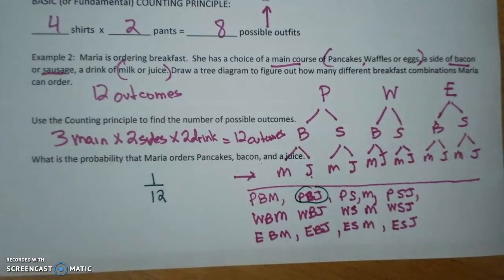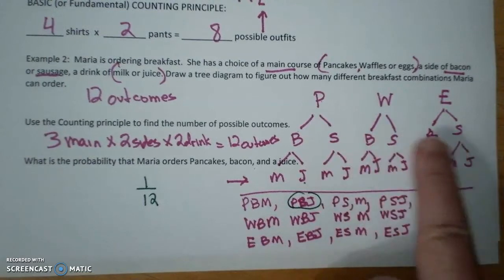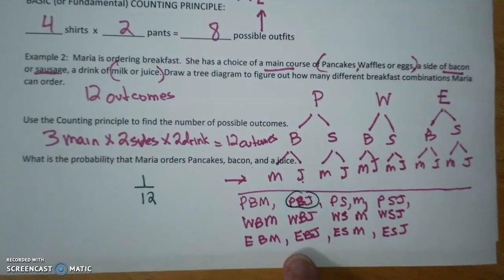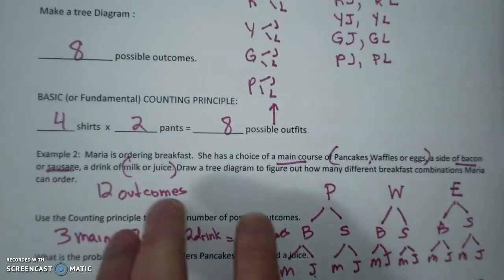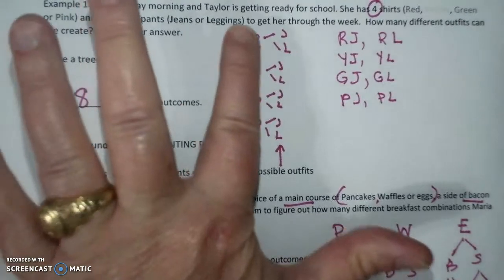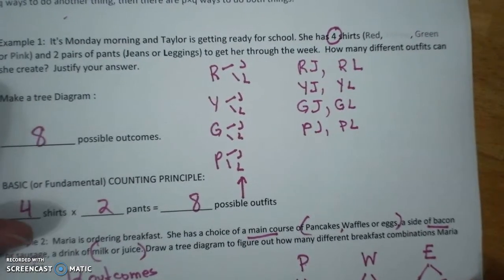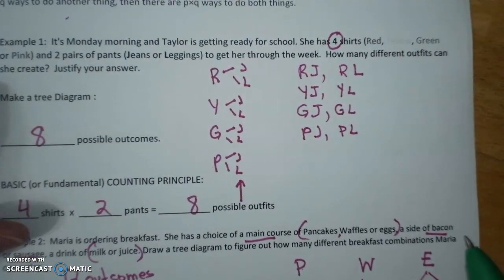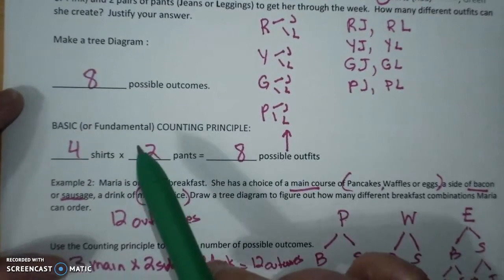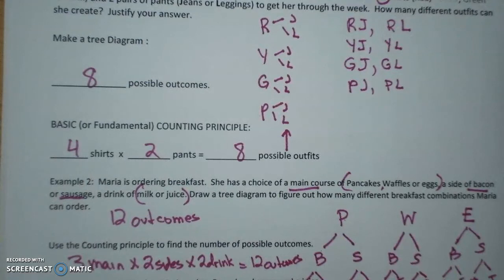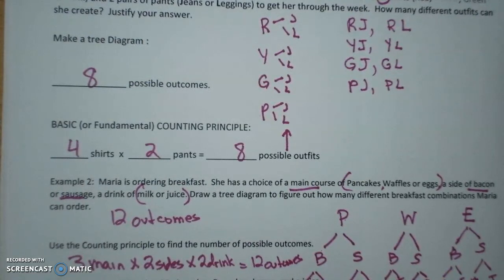So today you are going to be asked to draw tree diagrams and possibly calculate the probability. In your tree diagrams you can either do them horizontally, make sure you do the branches, make sure you are able to draw out your sample space after you're done, or you can do it vertically. And then be sure you are familiar with how to calculate the number of outcomes using the basic counting principle.